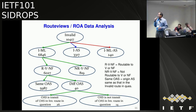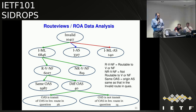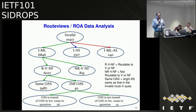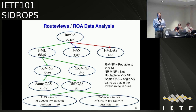Drilling down on the max-length invalids: is there a valid or not-found less-specific to which they can be routed? About 6,000 out of 6,800 are routable to a valid or not-found less-specific. Of those, how many have the same origin AS versus a different origin AS? Almost all have the same origin — a very small fraction have a different origin. That's expected because in the case of max-length invalid, the owner is routing both the less-specific and more-specific and forgot to put the right max-length or forgot to create an additional ROA for the more specific. Of the 40 with a different origin AS, 26 go to the transit provider of the different AS — it's just going one AS above.